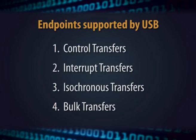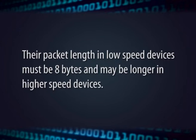USB supports four types of data transfer. 1) Control transfers: typically used for command and status operations, essential to set up a USB device. Packet length in low speed devices must be 8 bytes, and may be longer in higher speed devices. 2) Interrupt transfers: requested by devices and queued; the host polls all such requests and carries out data transfer one by one. These transfers guarantee a certain speed and response time.